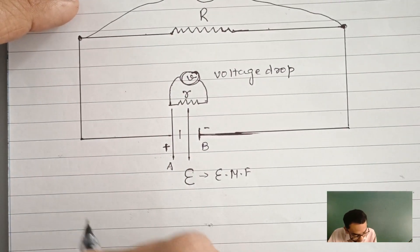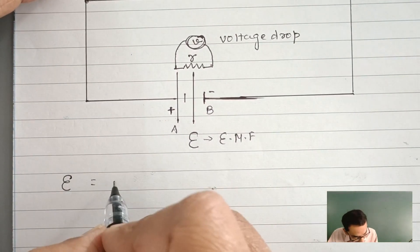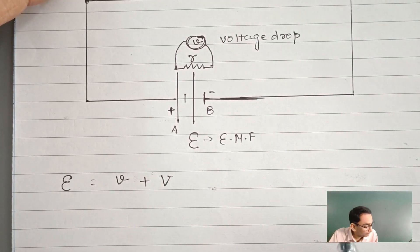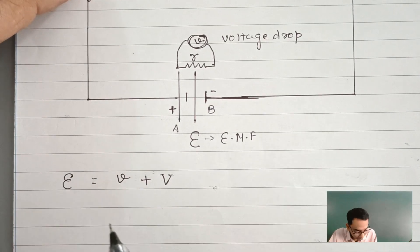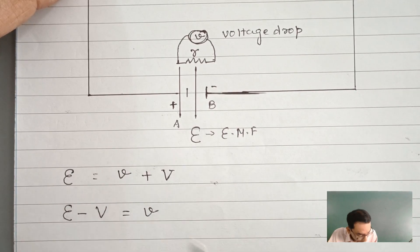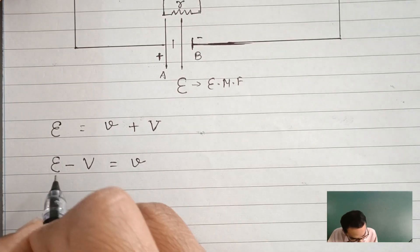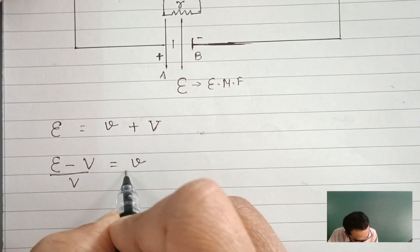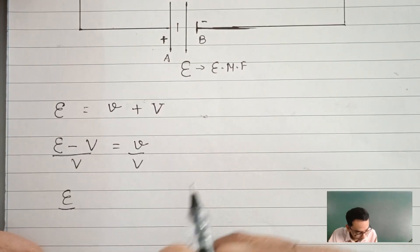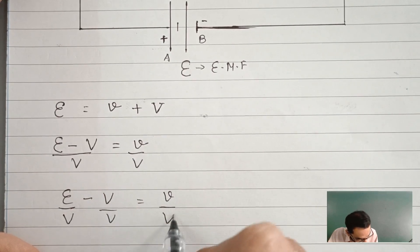We know that EMF is equal to the potential drop small v plus the terminal voltage capital V. I am going to transfer this E to the other side, so EMF minus V equals small v, which is the terminal voltage. I am going to divide both sides by capital V — dividing by the terminal voltage. Splitting this up: E upon V minus V upon V equals small v upon capital V.